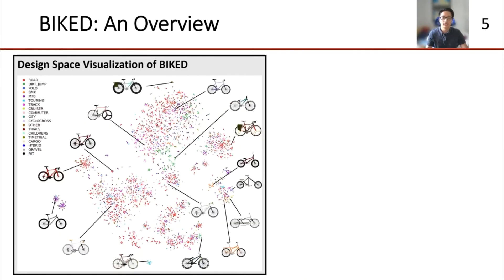So what exactly is BIKED? The dataset consists of 4,500 individually designed bicycle models of 20 different classes. The designs were sourced from an online archive of CAD models affiliated with the parametric bicycle design tool, BikeCAD. BIKED actually contains three different types of data about each model, and this is really where we feel that BIKED sets itself apart from other datasets.